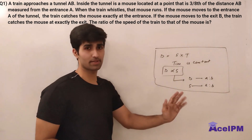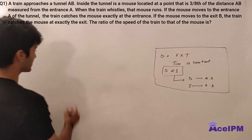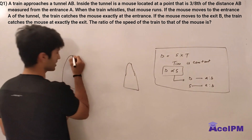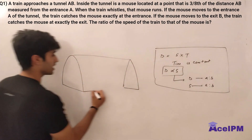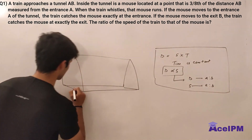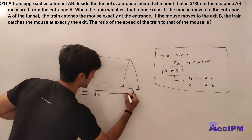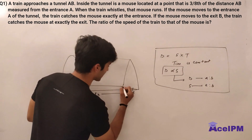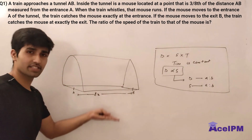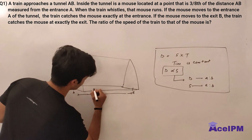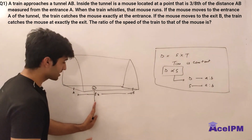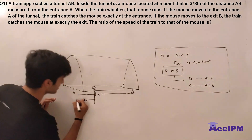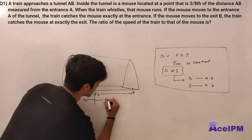Let's say there is a tunnel AB. I've taken the length of the tunnel as 8x — because the values involve 3/8, so I take the denominator as the multiplier. The mouse is at 3/8 of 8x, which is 3x from the entrance, and therefore 5x from the exit.